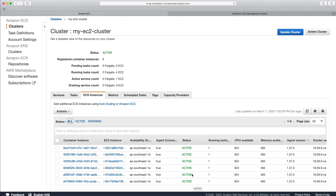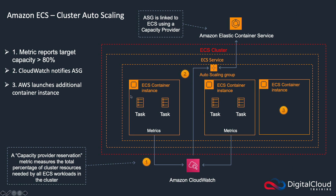That took a few minutes, but now we have all our instances running — six instances, each running one ECS task. Looking at the diagram: our ECS container instances report the capacity provider reservation metric to CloudWatch. CloudWatch detected that utilization was over 50%, triggering the auto scaling group to create another ECS container instance. With more capacity in the cluster, the ECS service was then able to launch additional tasks.